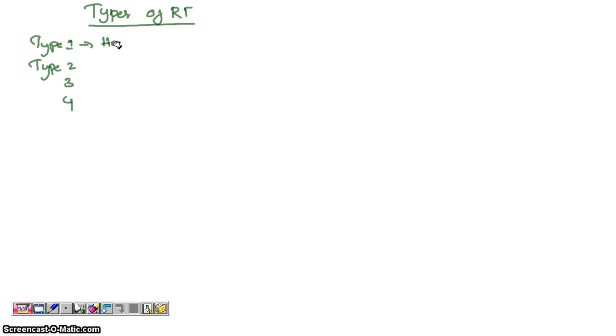Type 1 is broadly called as hypoxemic respiratory failure with PaO2 less than 60 mmHg. Type 2 is hypoxemia with the main important thing being hypercapnia.